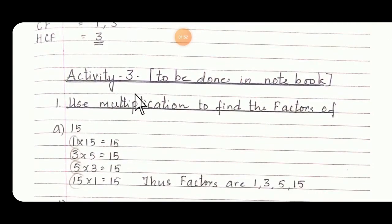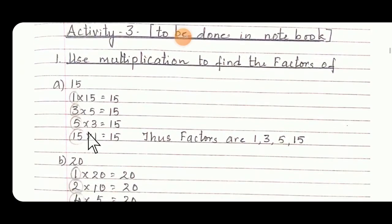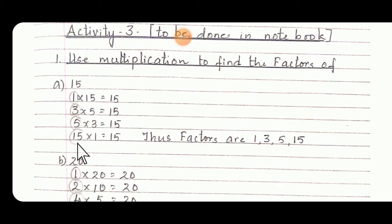Activity 3. Use multiplication to find the factors. A: 15. How we are going to get 15 by multiplication? 1 into 15, then 3 5s are 15, 5 3s are 15, 15 into 1 is 15. Thus factors are 1, 3, 5, and 15.